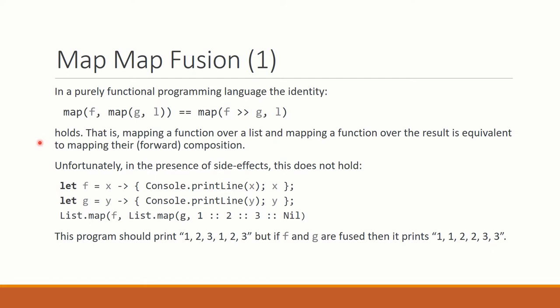Now in an impure programming language, this identity does not hold. For example, if this is F and this is G, and they are printing the elements before simply returning them, then evaluating this expression here will print 1, 2, 3, 1, 2, 3 corresponding to traversing the list twice. Whereas if we compose F and G and then map them, then we will see the elements in a different order. So this shows that in general in the presence of impurity, we cannot perform this composition.